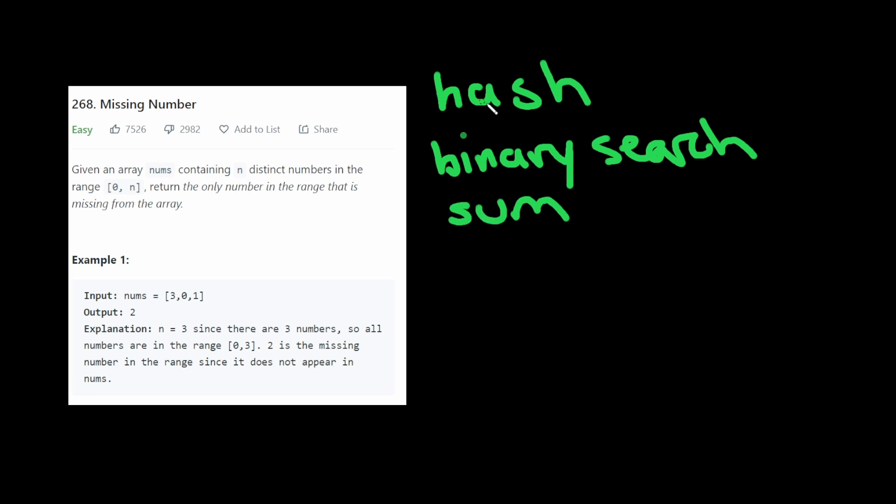You could also sum up all the numbers in the array and see how much is missing. This one uses O of n space complexity, which is not as good as O of 1. This one is O of n log n time, because you have to sort the array first, and this one could lead to overflows when n is a very large number.